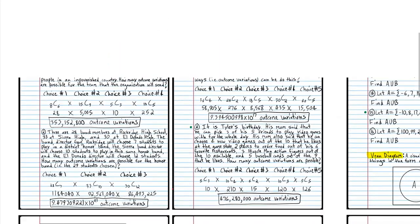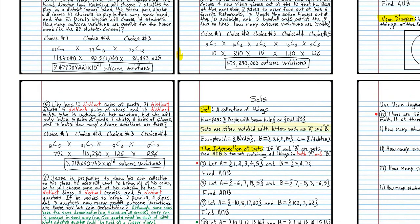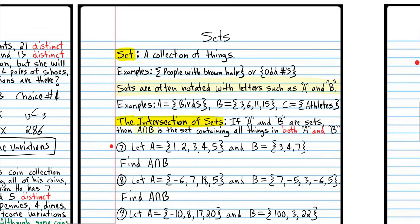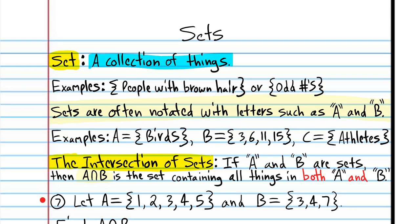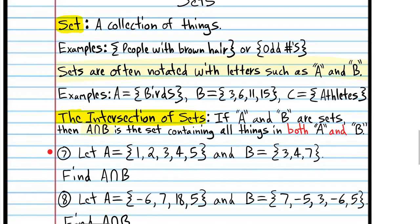Now we're going to learn about sets. A set is just a collection of things — for example, people with brown hair, or the odd numbers 1, 3, 5, 7, 9. Sets are often notated with capital letters like A or B. Capital A could be all the birds in the world; capital B could be the numbers 3, 6, 11, 15; and C could be all the athletes in the world.